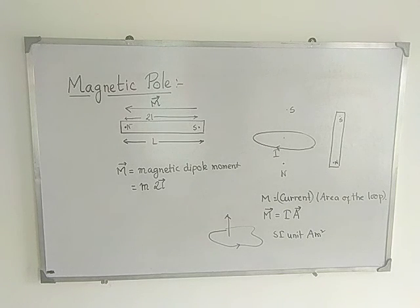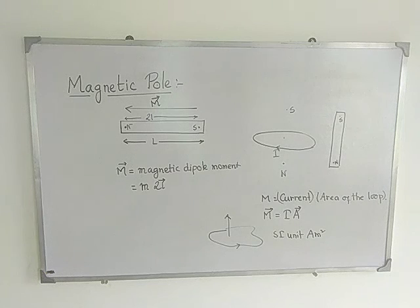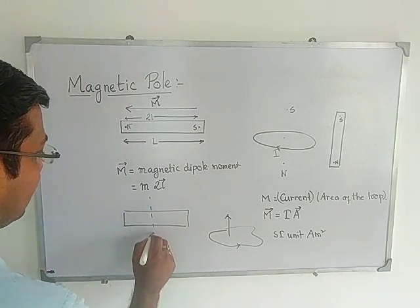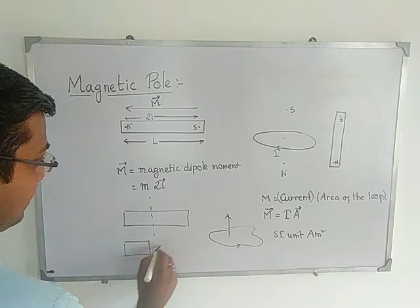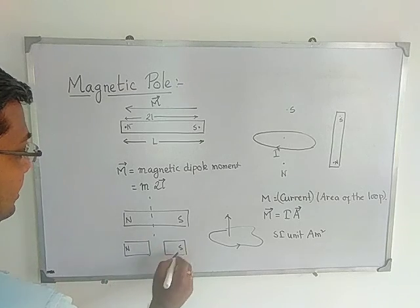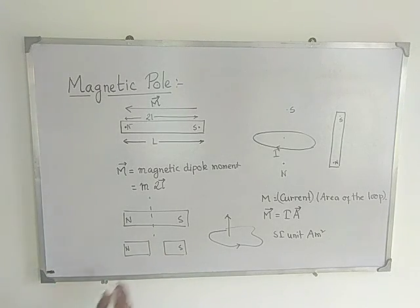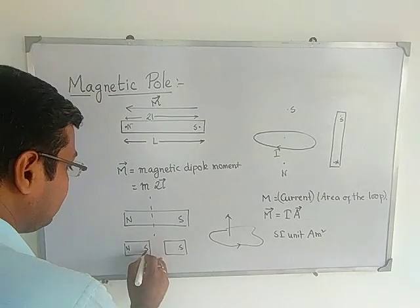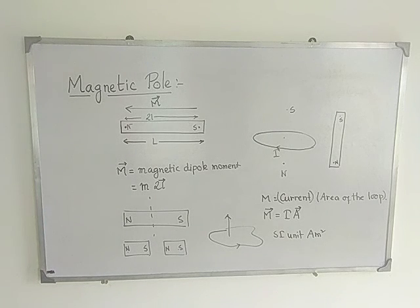The magnetic monopole cannot exist, but the magnetic dipole can exist. If you cut a magnet into two equal halves, two different magnets are formed — each with its own north and south pole. You cannot divide a magnetic dipole into two magnetic monopoles. The south pole appears on one piece and the north pole appears on the other. So the magnetic monopole does not exist.